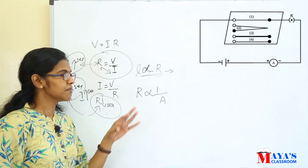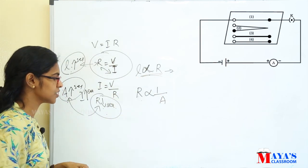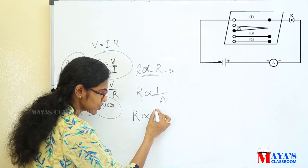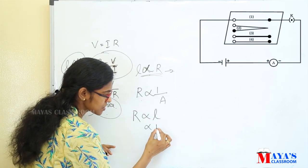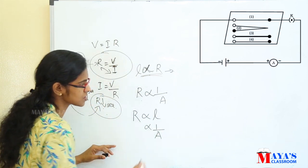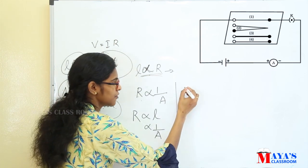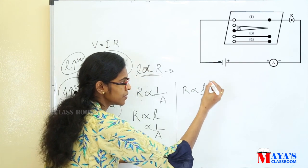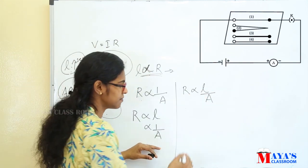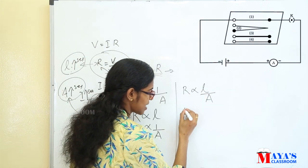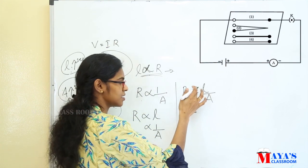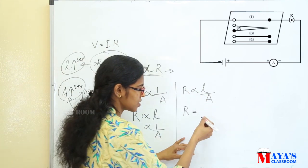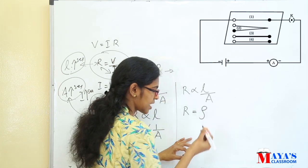We can combine these two relations. Therefore, we can write that resistance of a conductor is directly proportional to length and also inversely proportional to area of cross-section. So R is directly proportional to L divided by A. We change the proportionality sign into a constant.